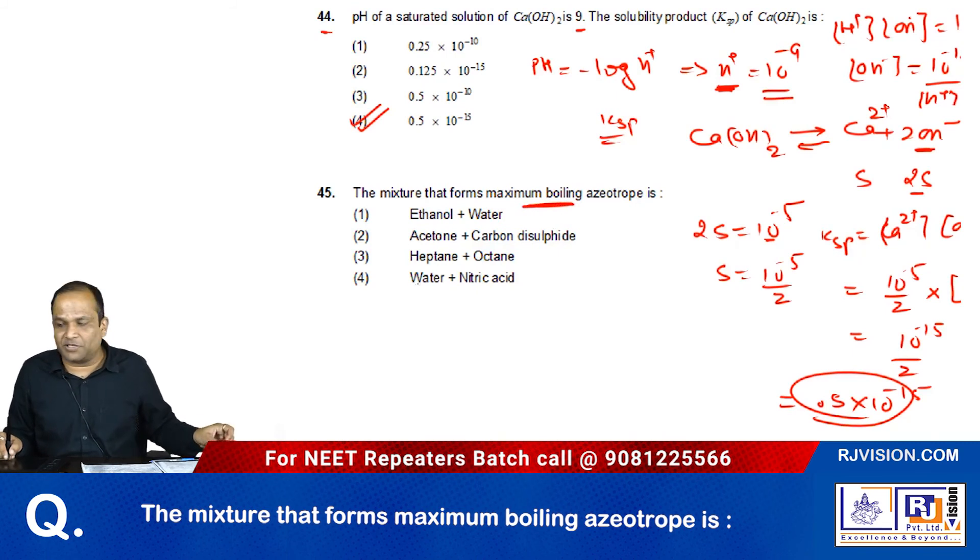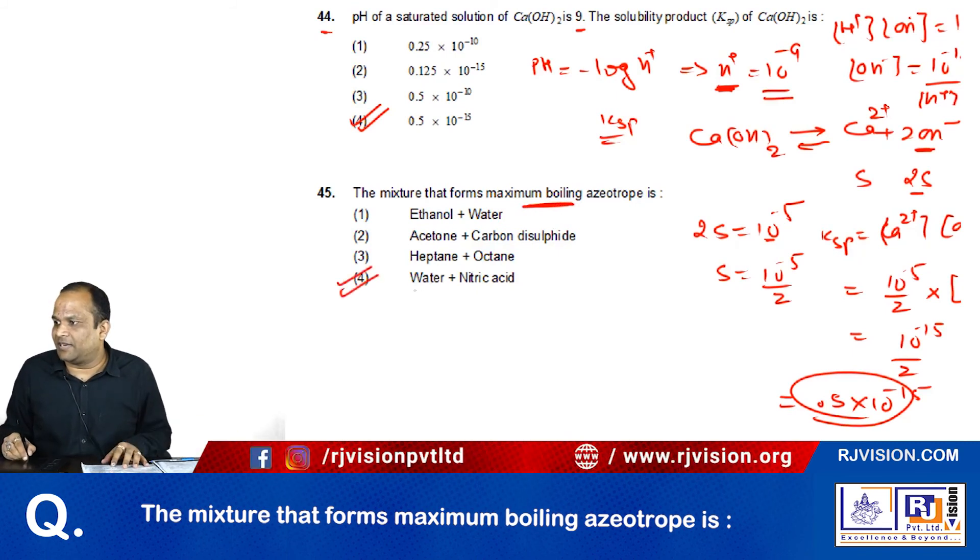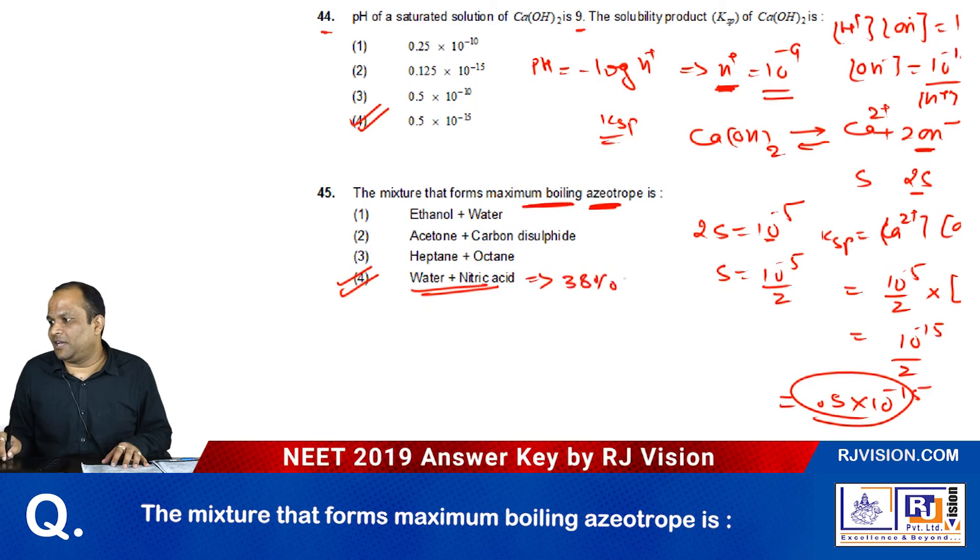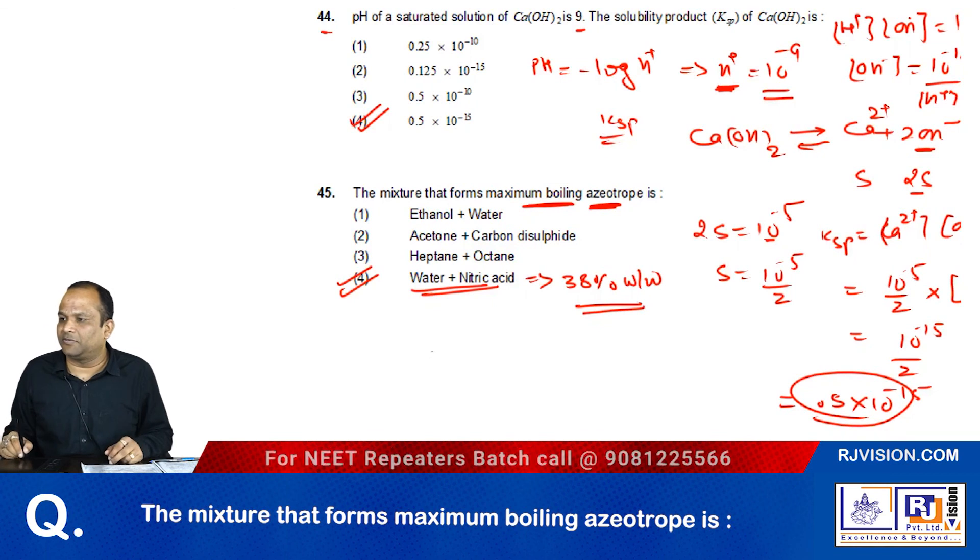This is directly given from the solution chapter. It is water and nitric acid which generally shows the maximum boiling azeotrope, and this mixture in textbook is given as 38 percent weight by weight. So the answer is fourth. This is complete chemistry, thank you from RJ Vision.